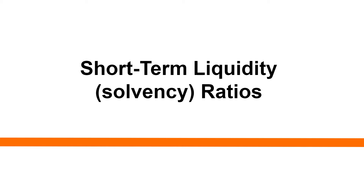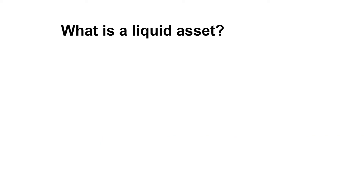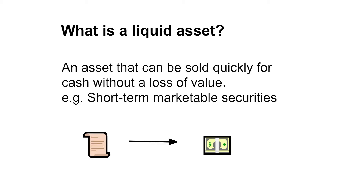Today I'm going to talk about short-term liquidity or solvency ratios. A liquid asset is an asset that can be sold quickly for cash without a loss of value. For example, short-term marketable securities.